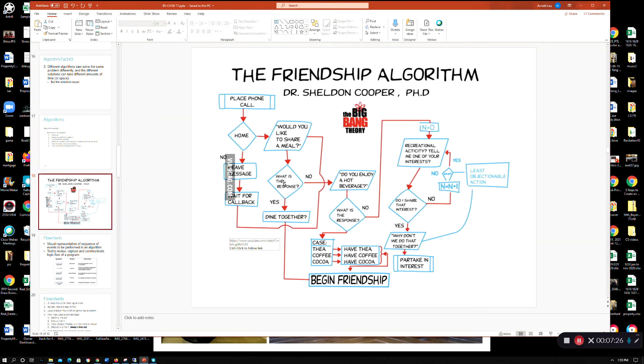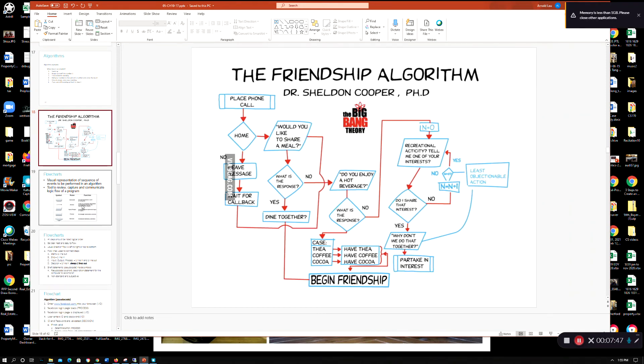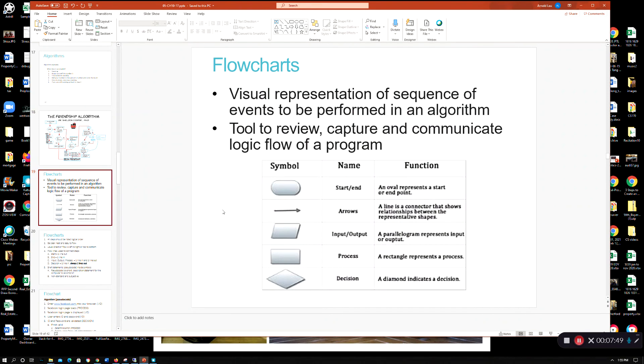But for the purpose of this class, and for the purpose of the type of programs you're going to be writing, you really need to stick to that - yes and no, or one or two choices. And there's a way to nest these decisions together so you can still accommodate like three or four different outputs. And we can go over that in a separate time.